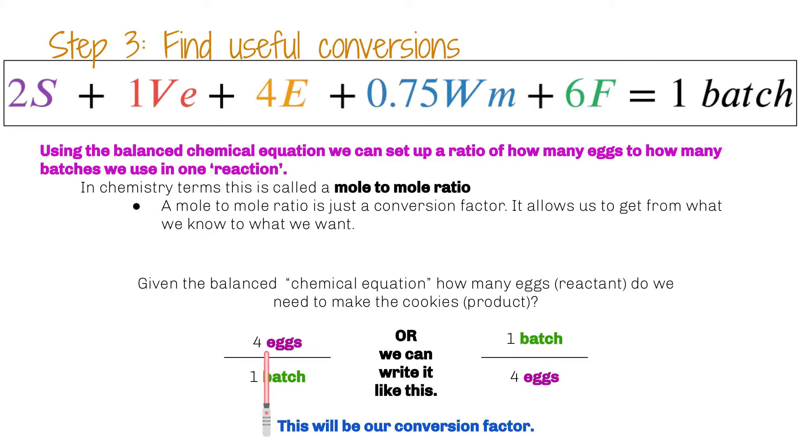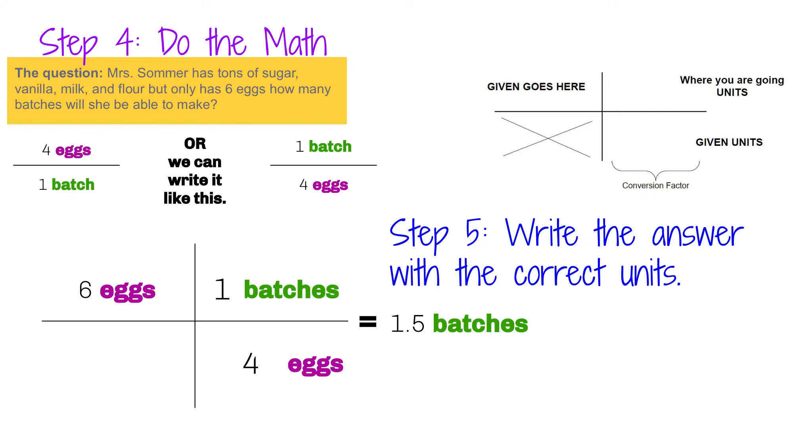So in each batch, there are 4 eggs for 1 batch or 1 batch for 4 eggs. So now we need to do the math. So I have 4 eggs. And these are my conversion factors. And then I started with 6 eggs. That's all I had in my refrigerator. So I have 6 eggs. And then, so I want my eggs to cancel.